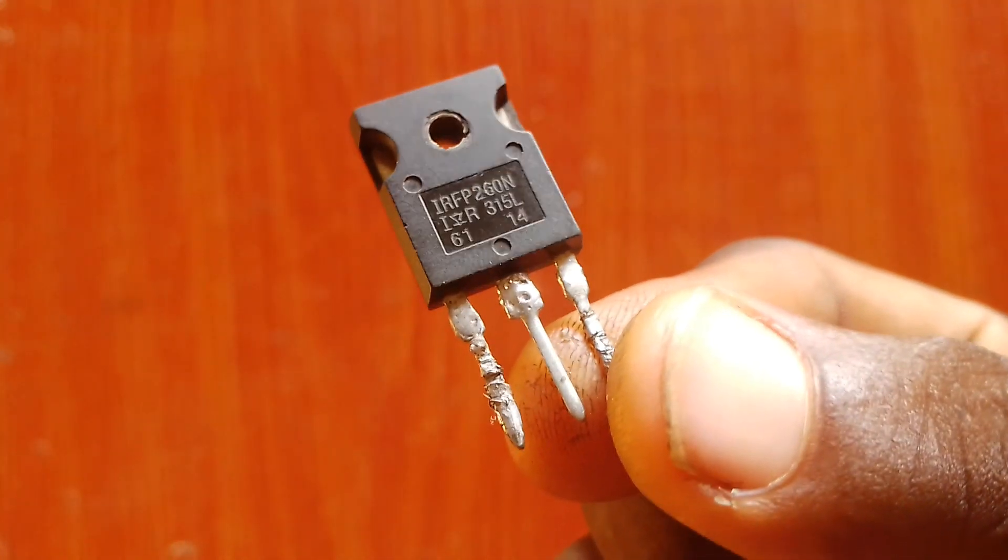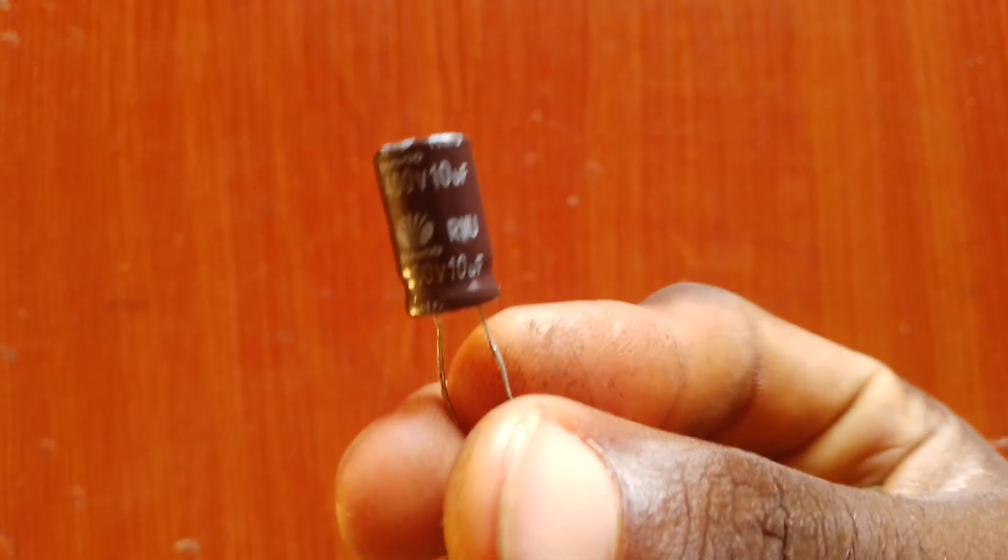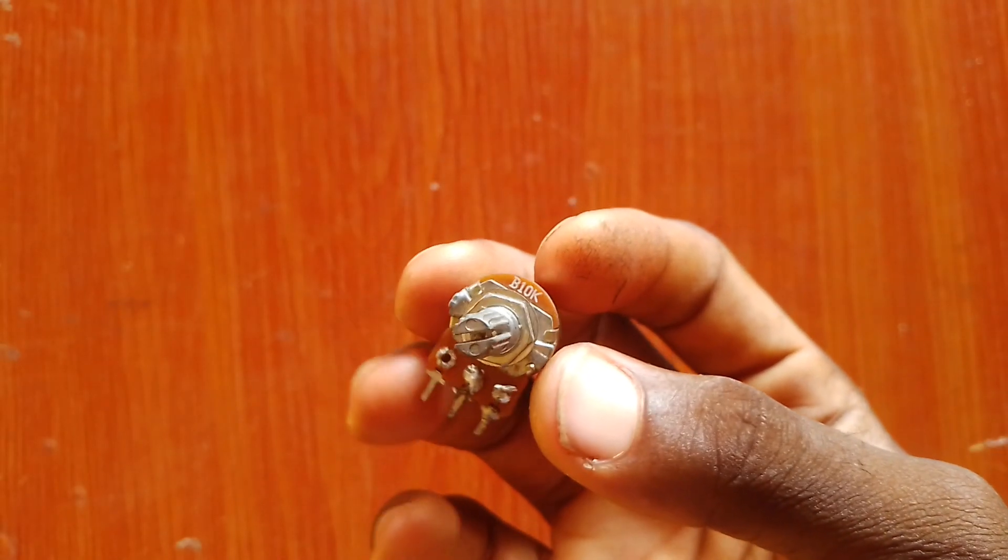Then I started gathering my components. So I got my IRFP260N MOSFET, got my 10 microfarad capacitor, got my 10 kilohm potentiometer, and also my 220 ohm resistor.